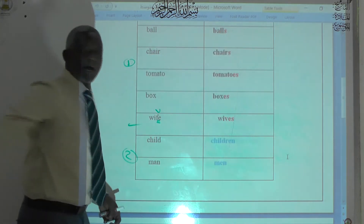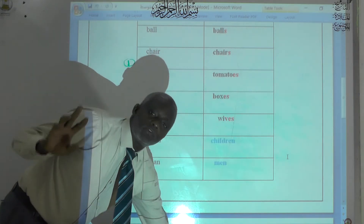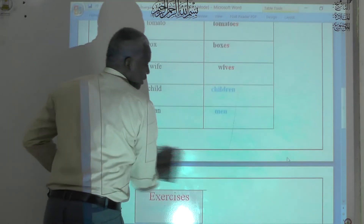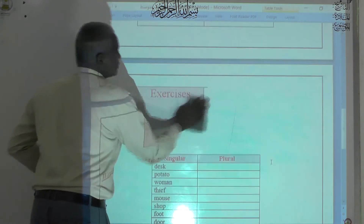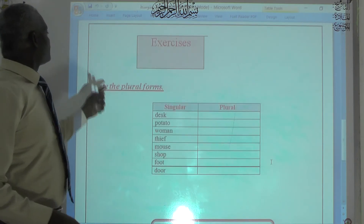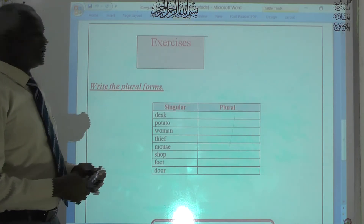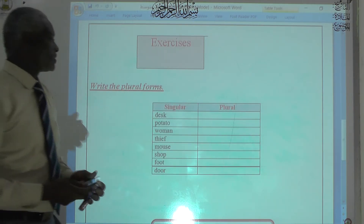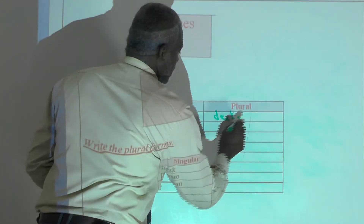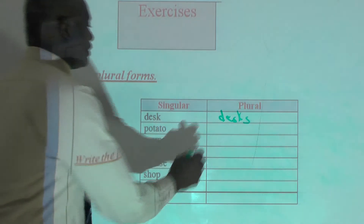We form the plural by adding s and es to the end of the word. Is it clear? Okay. Let's go to the next part — our exercise. Write the plural form of these words: hammer, tomato.